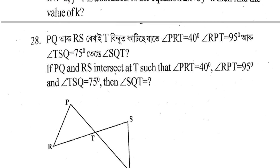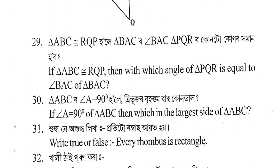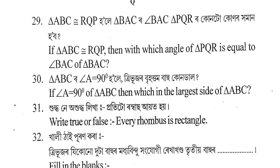Next question: PQRS is a rack with height T. Given angle PRT equals 40 degrees, angle RPT equals 95 degrees, and angle TSQ equals 75 degrees, find angle SQT.